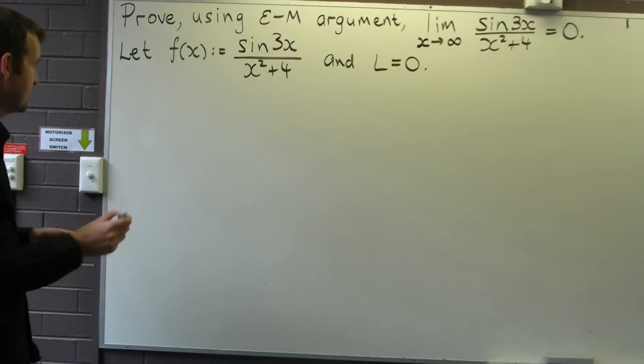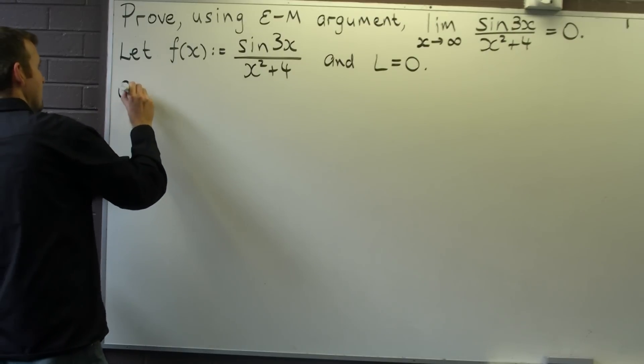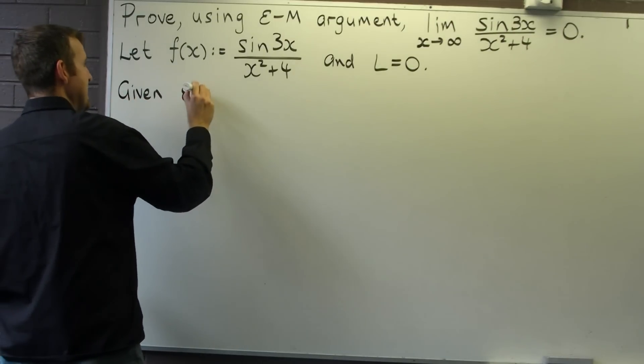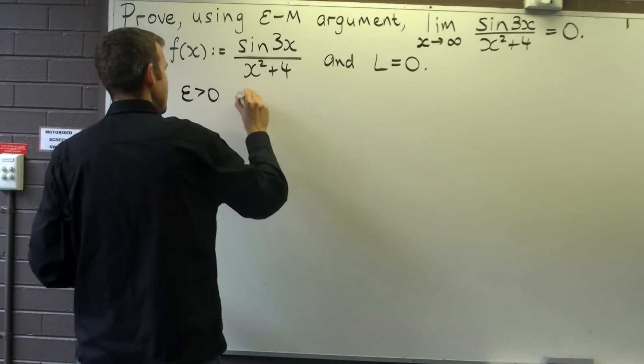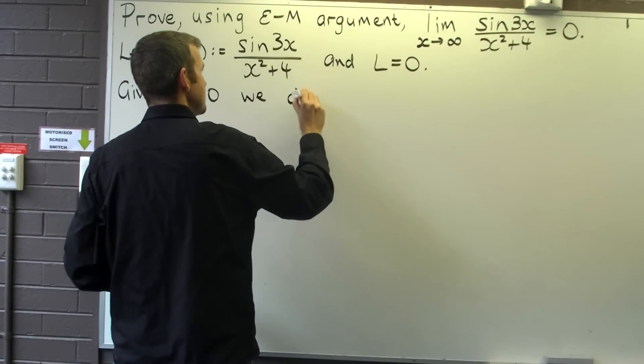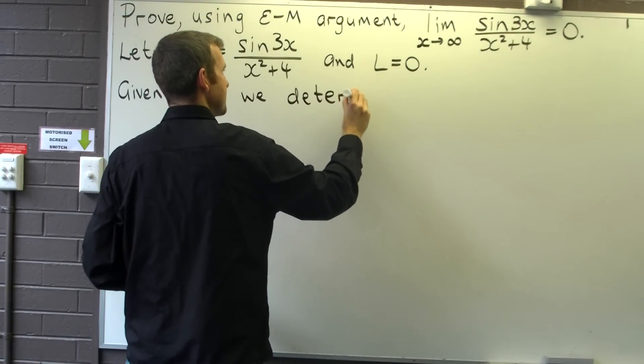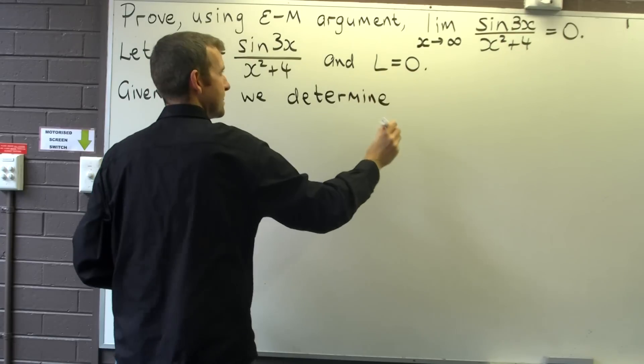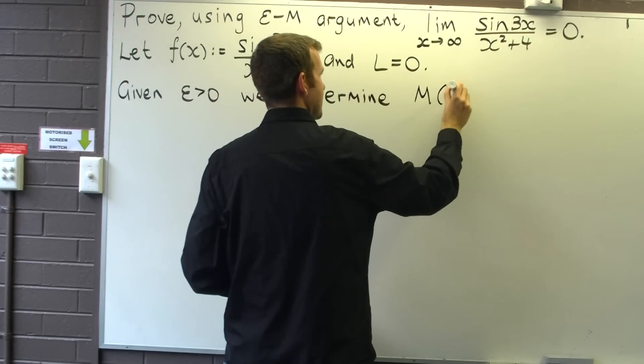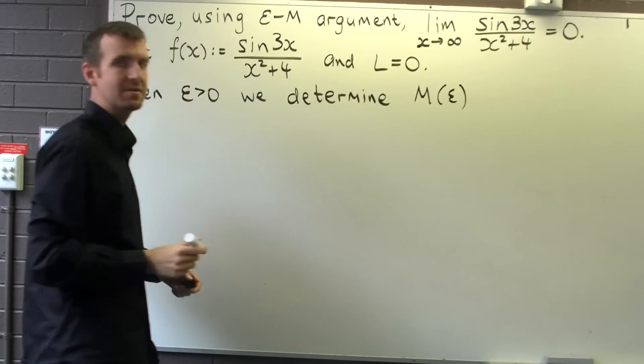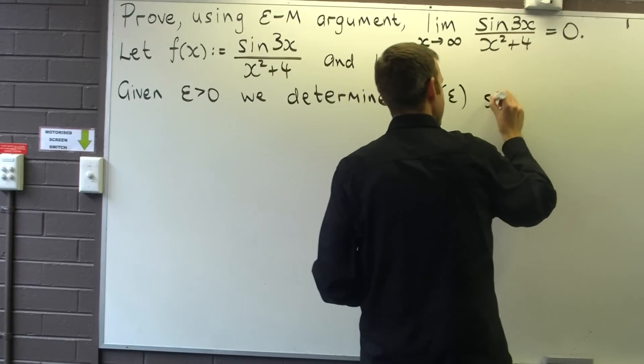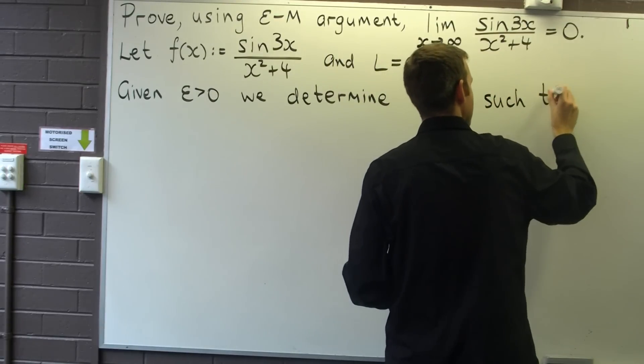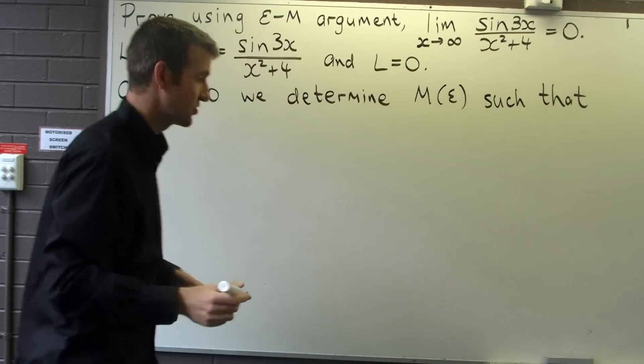Alright, so this is what we want to do. Given any positive number epsilon, we want to determine M(ε) such that the following is true.